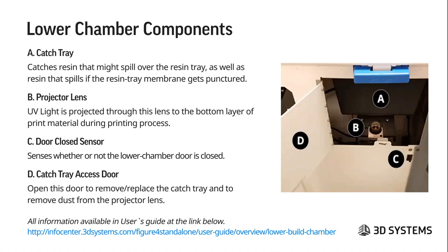The lower chamber components — primarily for the standalone, though the projector system is set up the same — include: the catch tray which catches resin that might spill over or if the membrane is punctured, preventing it from reaching the projector. At B is the projector lens through which UV light is projected to the bottom layer of print material. In dusty environments this needs to be kept clean. There is also a door closed sensor — the machine will not operate unless the door is closed — and a door that covers the catch tray access and prevents UV light from leaking out.